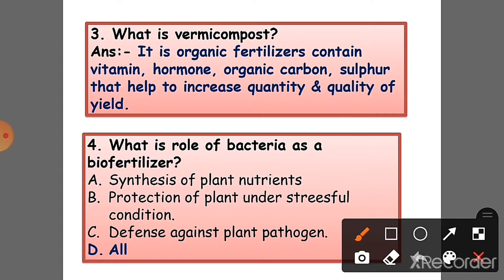Question 3: What is vermicompost? Answer: It is an organic fertilizer containing vitamins, hormones, organic carbon, and sulfur that help to increase the quality and quantity of yield. Question 4: What is the role of bacteria as a biofertilizer? Answer: The synthesis of plant nutrients...